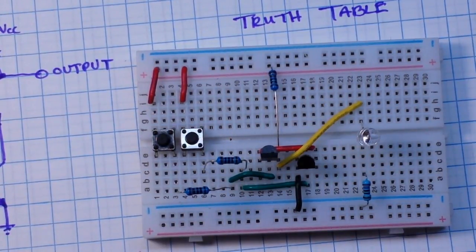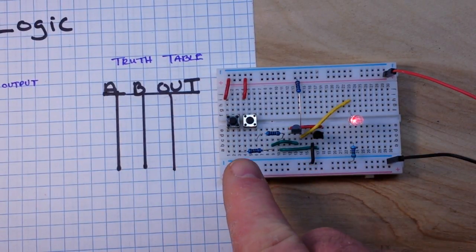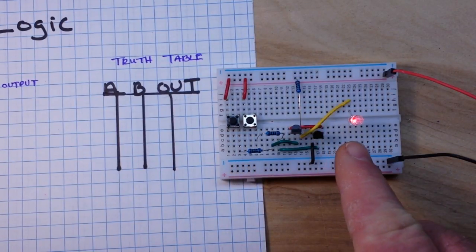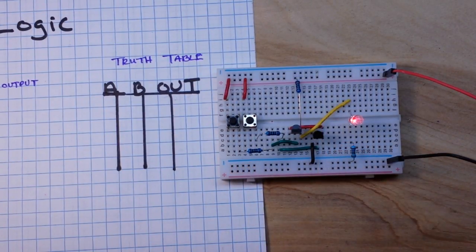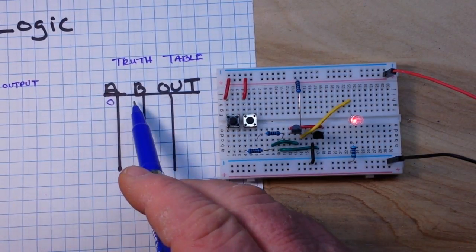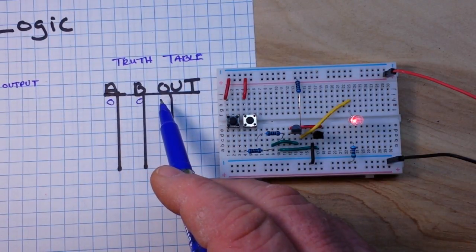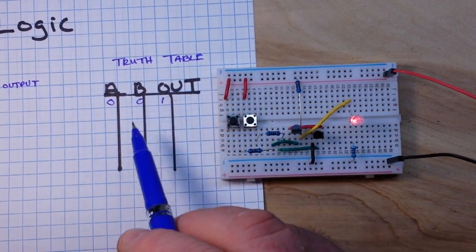So let me put some power to this and we'll give her a play. Okay so here is our NAND gate and it's powered up. Both inputs are false, they're both 0, so the output is true. So we know that A is 0, B is 0, and our output is 1.